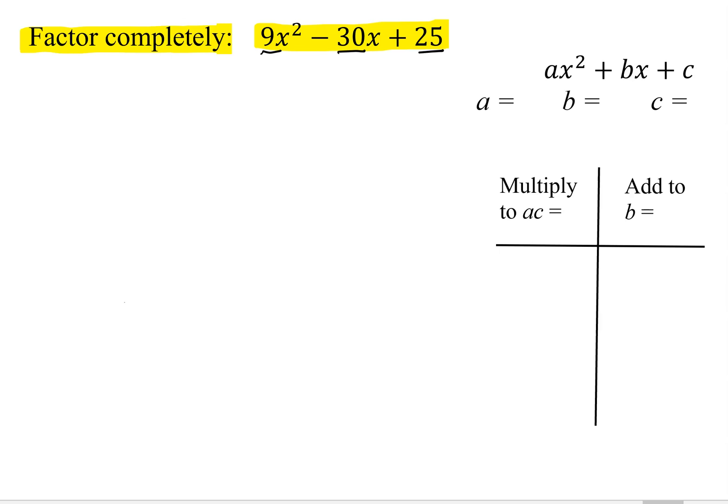So I'm going to factor this by the AC method. So what I have to do is compare it to this equation here. So a is the coefficient of the x squared, so a is 9, b is negative 30, and c is the constant. And now I'm going to have to multiply a times c. So that's 9 times 25, which is 225.